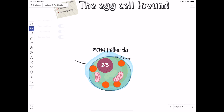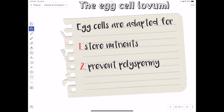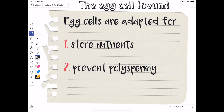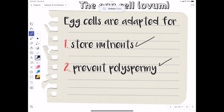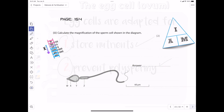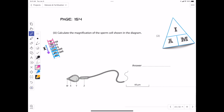The egg cell is the largest human cell and stores nutrients for the early stages of the embryo. Around the egg there is a jelly coating called zona pellucida, and vesicles called cortical granules. The cortical granules and zona pellucida are very important for the process of fertilization — specifically to prevent the entry of more than one sperm.